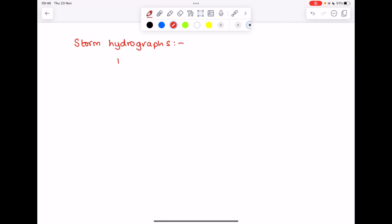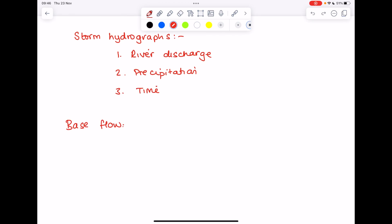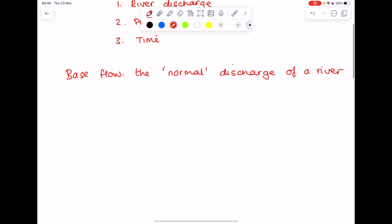So as I've already said, storm hydrographs show river discharge, precipitation, and time. They have a base flow which is the normal discharge of a river, as well as a storm flow which is the extra discharge of a river which results from a storm.